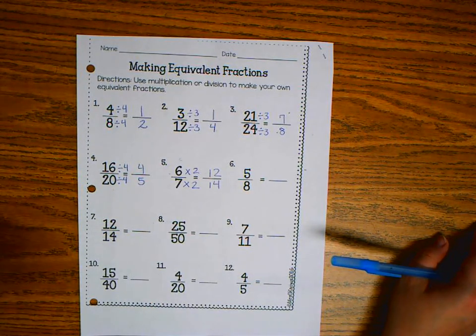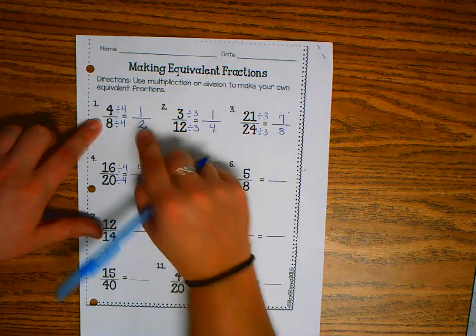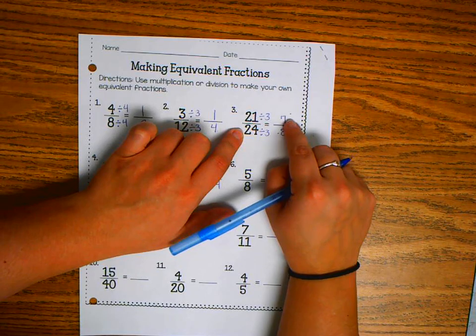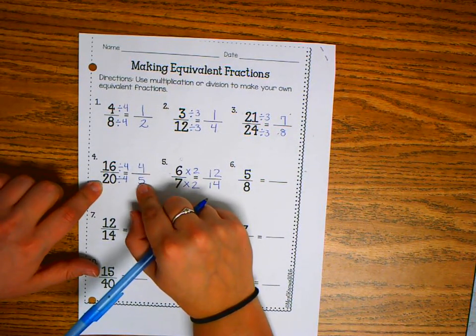So those are making equivalent fractions. 4 eighths and 1 half are the same. 3 twelfths and 1 fourth are the same. 21 twenty-fourths and 7 eighths are the same. 16 twentieths and 4 fifths are the same.